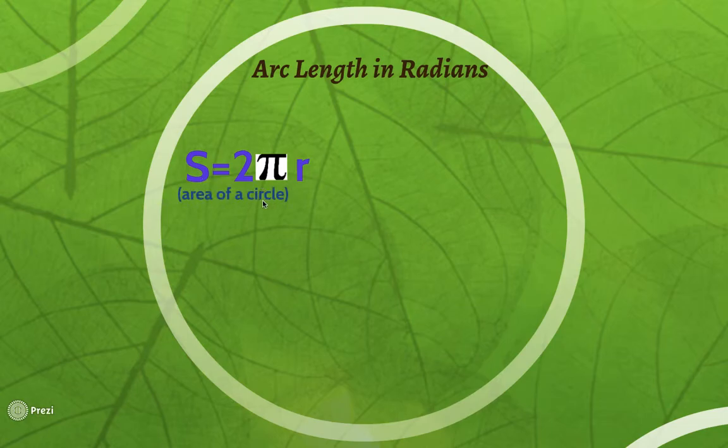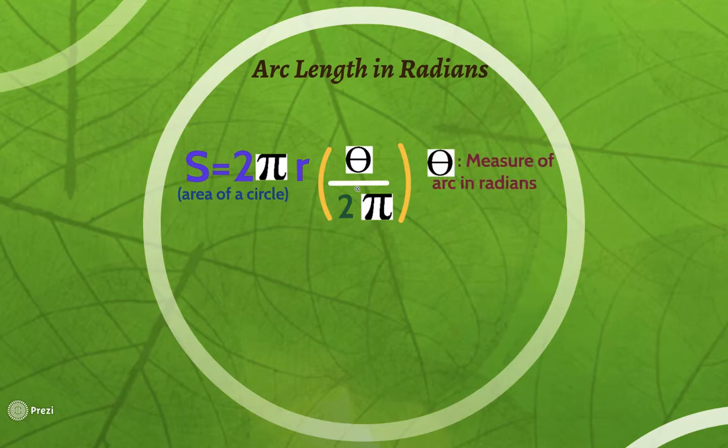We're going to start with the circumference of a circle, which is 2πr, and then we're going to multiply it by the fraction of the circumference we're dealing with, which is theta over 2π. Theta is the measure of the arc, but this time it's in radians.